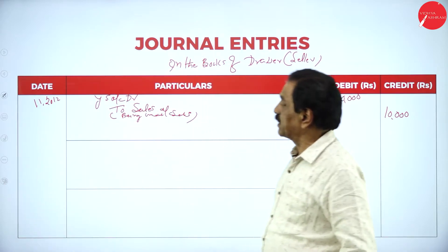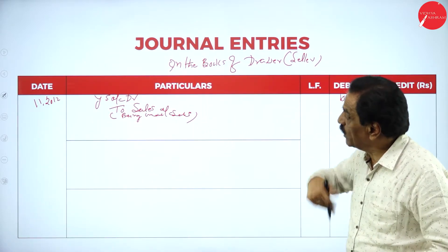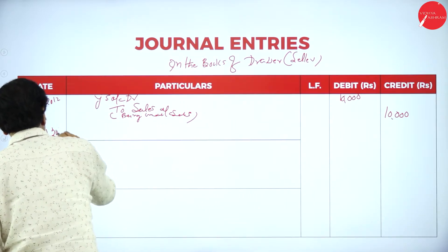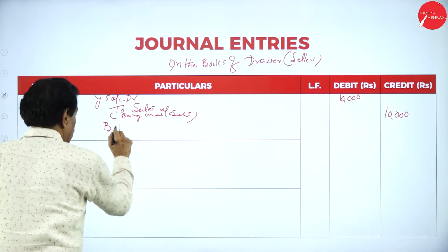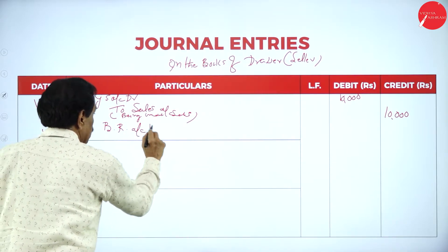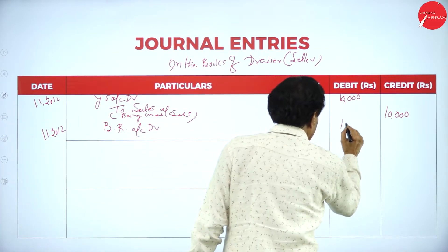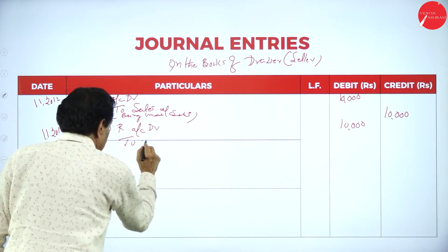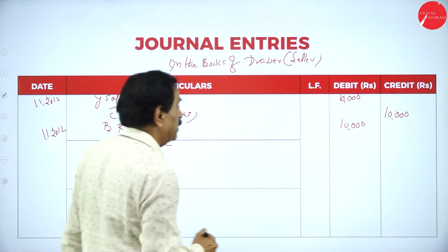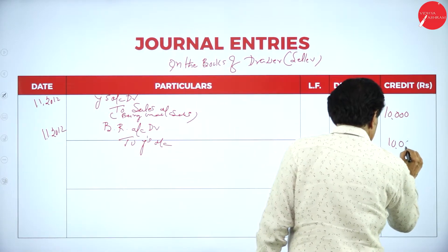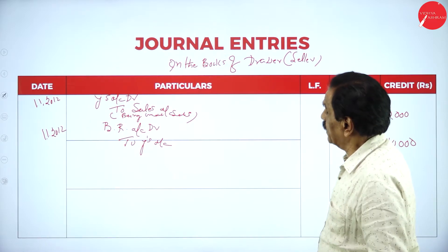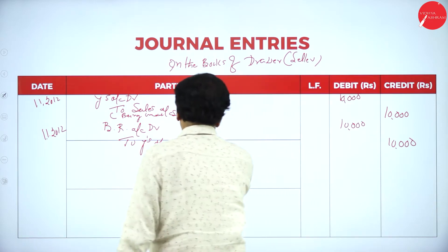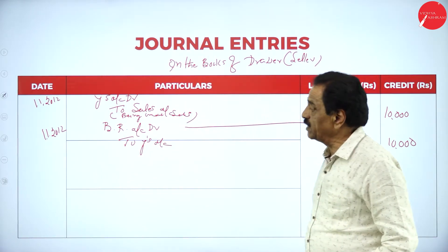Now, X writes the bill given to Y. Y accepts the bill and gives it back to X. Same date, the bill is coming in. BR account debit, 10,000, to Y's account 10,000. Bill is coming in. What is the first entry? Y's account debit to sales account. Then bill is coming in: BR account debit to Y's account, 10,000.